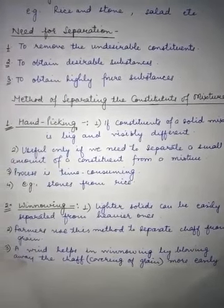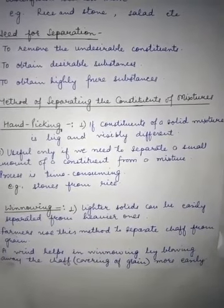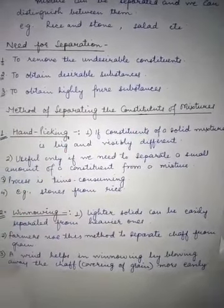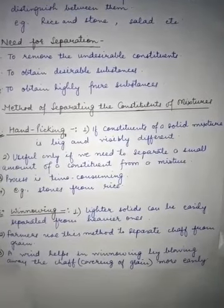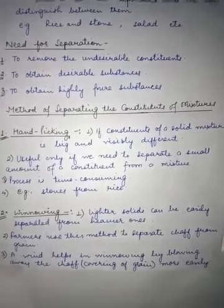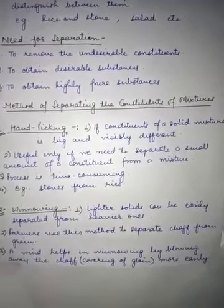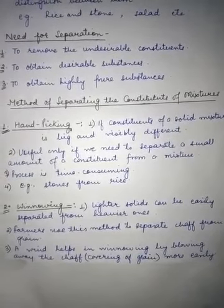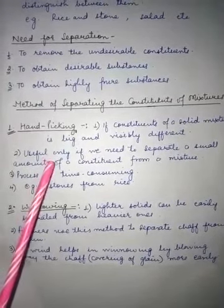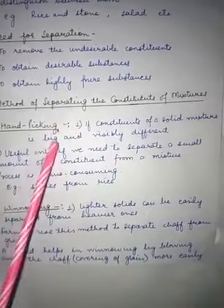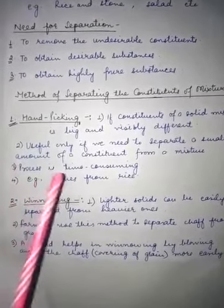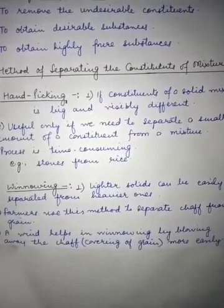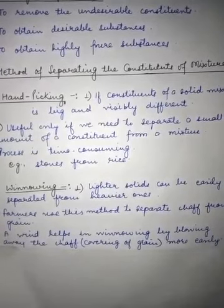The first method is hand picking. In hand picking, the constituents of a solid mixture must be large and visibly different so you can easily see and differentiate them. It is only useful when we need to separate a small amount, as the process is quite lengthy. An example is picking stones from rice — before cooking rice, we remove unwanted things like stones by simple hand picking.